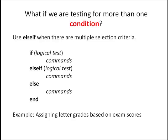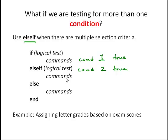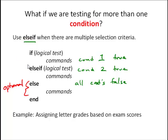So what happens if we have more than one condition? That's where we can use the else if command for multiple selection criteria. If condition one is true, we execute one set of commands. If it's not true, we test a second condition with else if. If condition two is true, we execute a second set of commands. Then else, if all conditions are false, we can execute a last set of commands — again, that's optional. And we can have as many else ifs as we want.